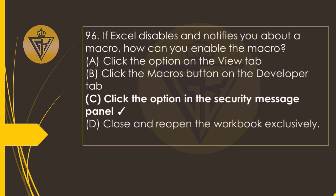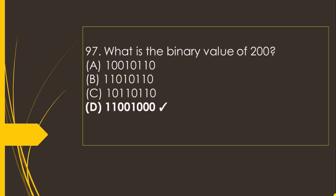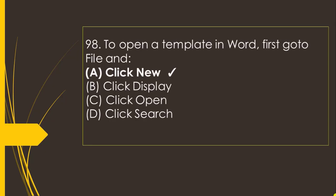If Excel disables and notifies you about a macro, how can you enable the macro? Go to the option C: click the option in the security message panel. To open a template in Word, first go to File and then go to option A, then click New.